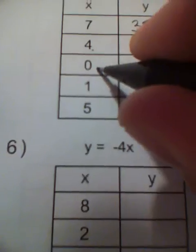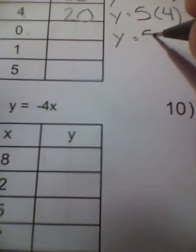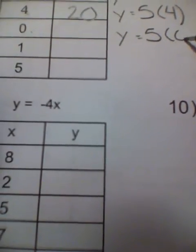Look at another one: x is 0. There's my function. y is equal to the constant 5, times 0, because that's what I'm substituting in for x. 5 times 0 is 0. The next one, I have x equal to 1. Go back to the function: y equals 5 times x. Now I know that x is equal to 1, so y is equal to 5 times 1. 5 times 1 is 5.